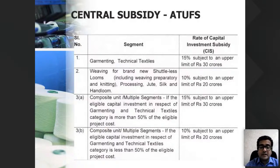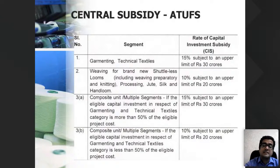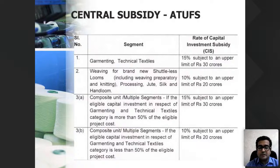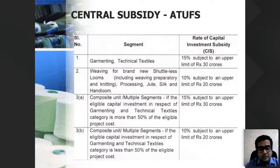A composite unit means two or more value-added chain activities are covered under the same entity — for example, a spinning unit and a garment unit under the same entity. For composite units, the subsidy is also 15%, subject to an upper limit of 30 crore. In general, remember that it is approximately 15% on the basic machine cost under ATUFS.